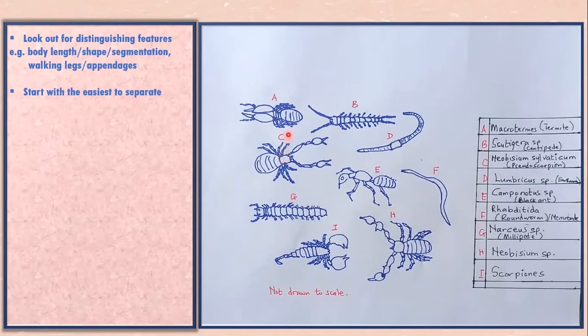Now, in constructing a key, you will look out first of all for general distinguishing features. So in this organism, for instance, some of the very general distinguishing features is the shape of the body. These ones, look at the shape. This one is elongated, elongated, D, F is also elongated, G is elongated.